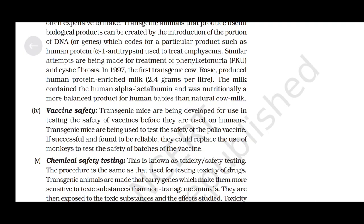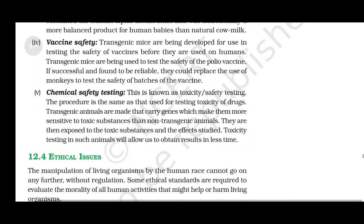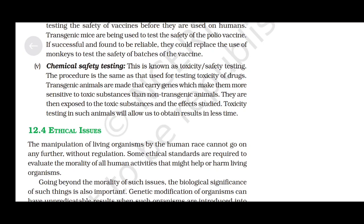Fourth, vaccine safety. Transgenic mice are being developed for use in testing the safety of vaccines before they are used on humans. Transgenic mice are being used to test the safety of the polio vaccine; if successful and found reliable, they could replace the use of monkeys to test the safety of batches of the vaccine. Fifth, chemical safety testing, also known as toxicity or safety testing. Transgenic animals are made to carry genes which make them more sensitive to toxic substances than non-transgenic animals; they are then exposed to toxic substances and the effects studied, allowing results to be obtained in less time.